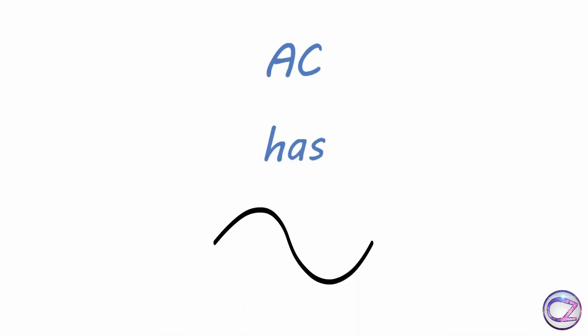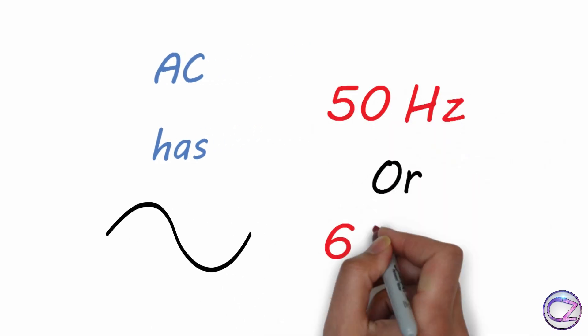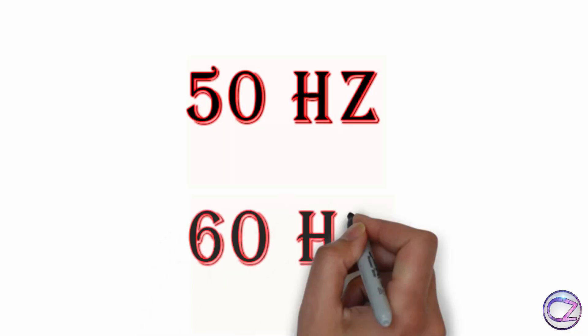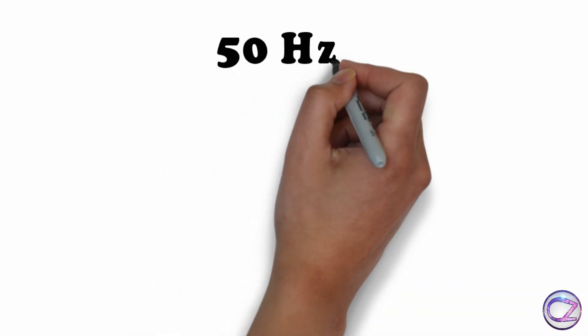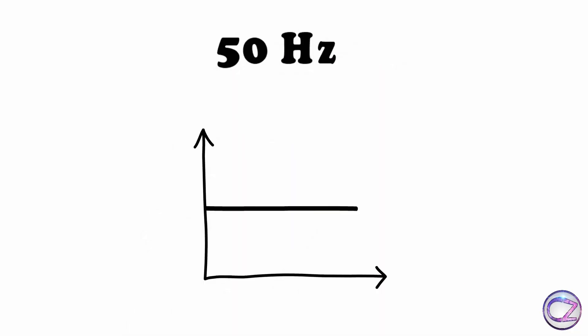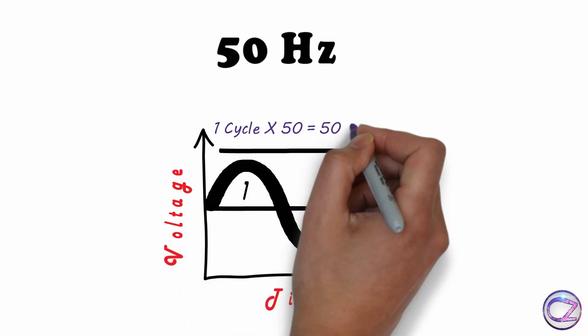Actually alternating current has frequency. I mean constant frequency, which is 50 or 60 hertz. Now what is 50 or 60 hertz. Actually 50 hertz mean current changes direction 100 times. That mean 50 cycles per second.